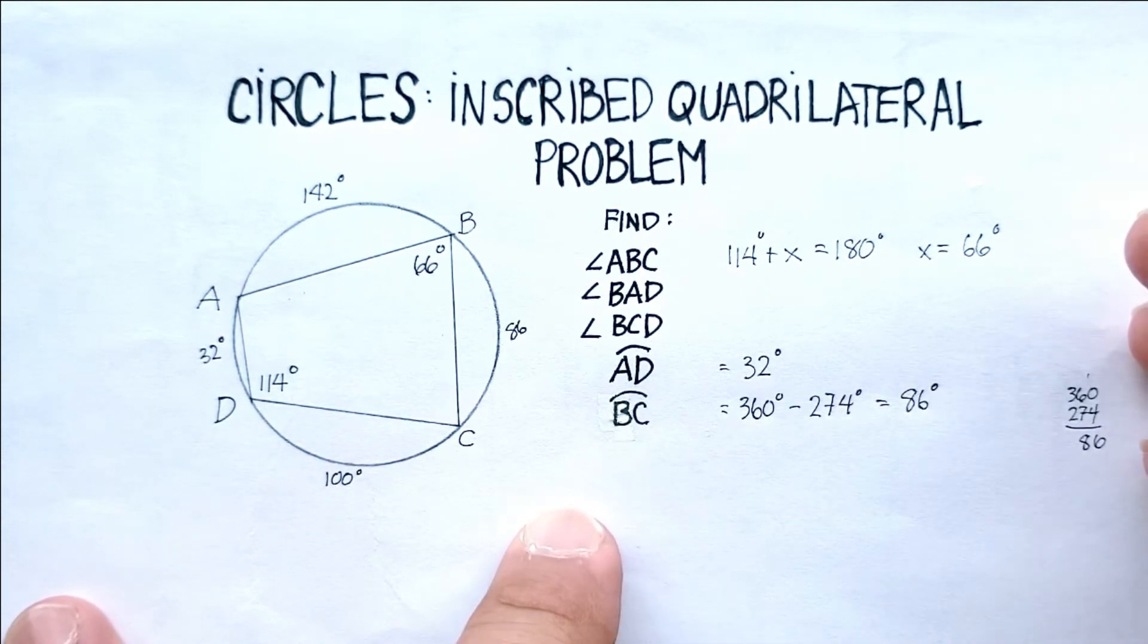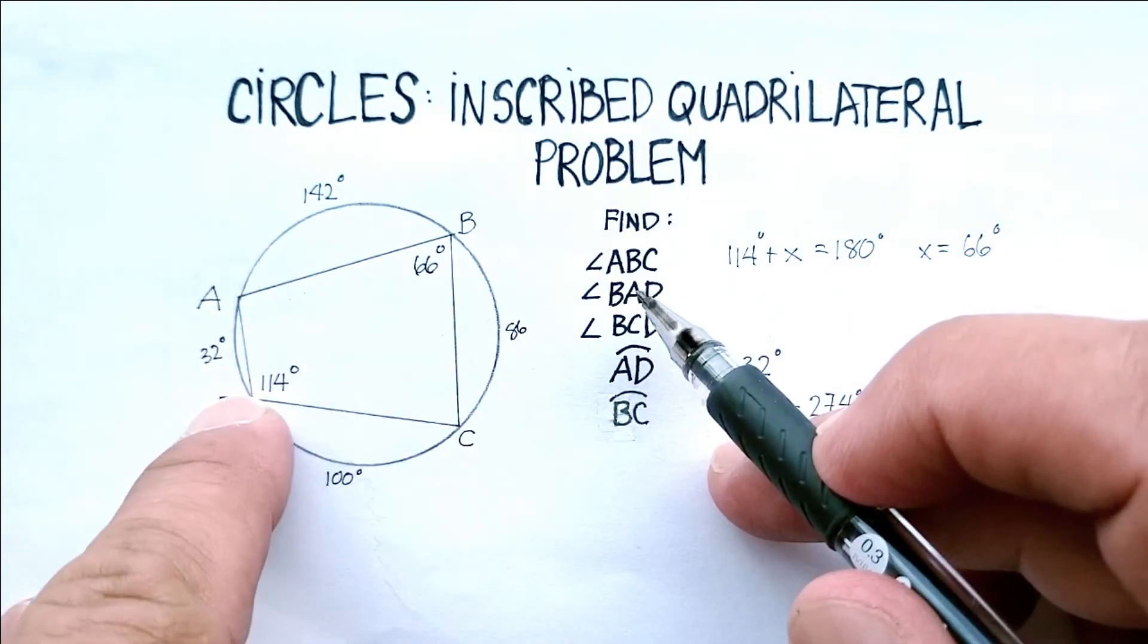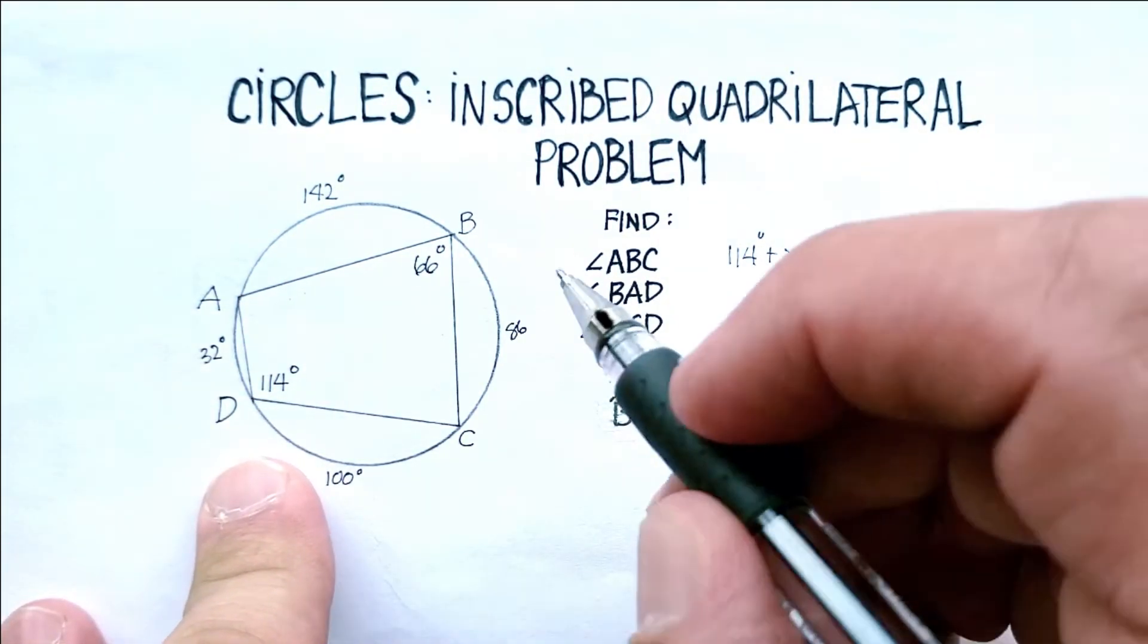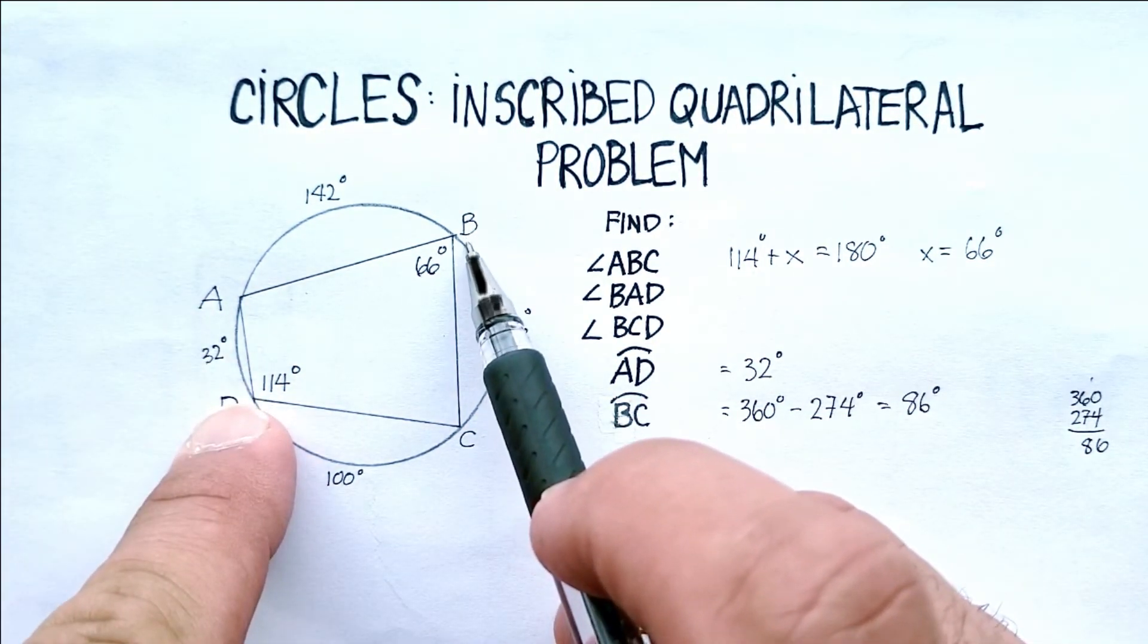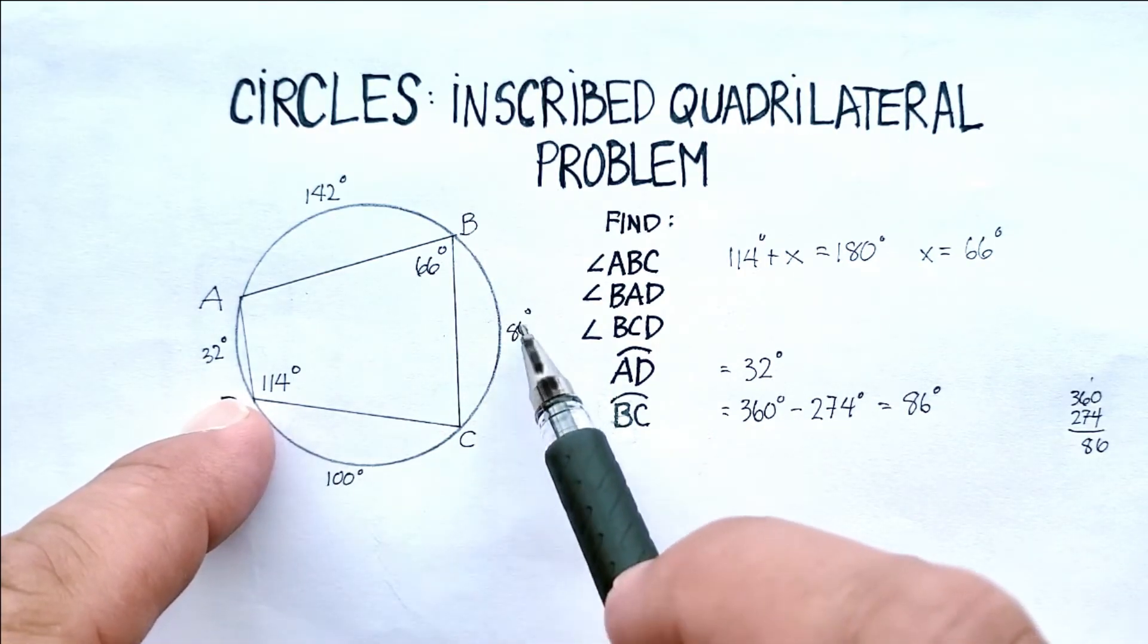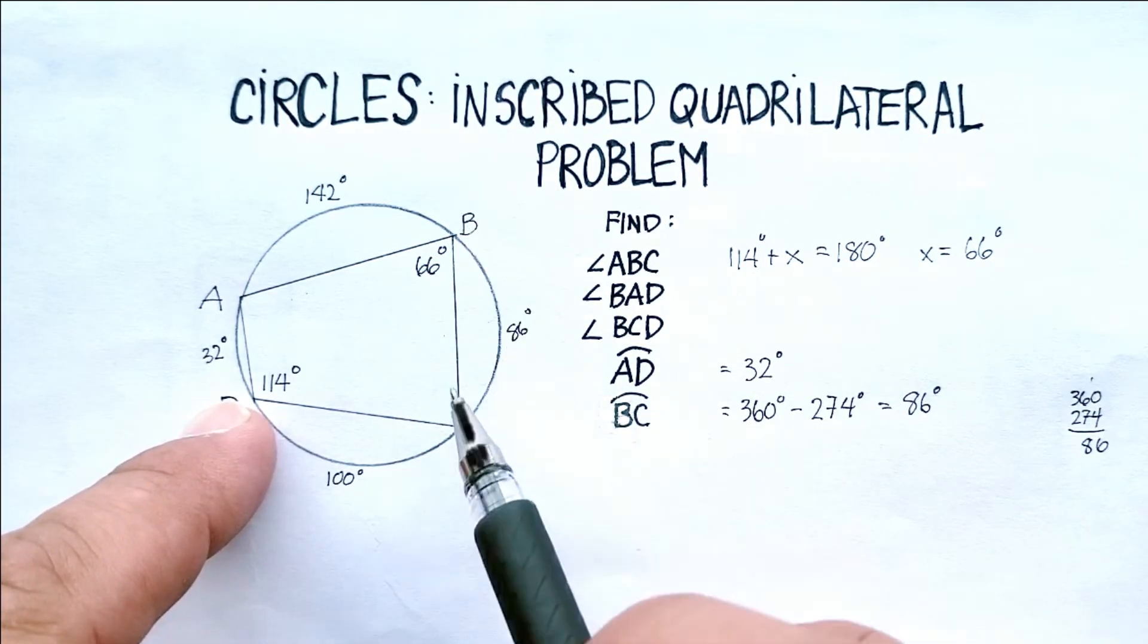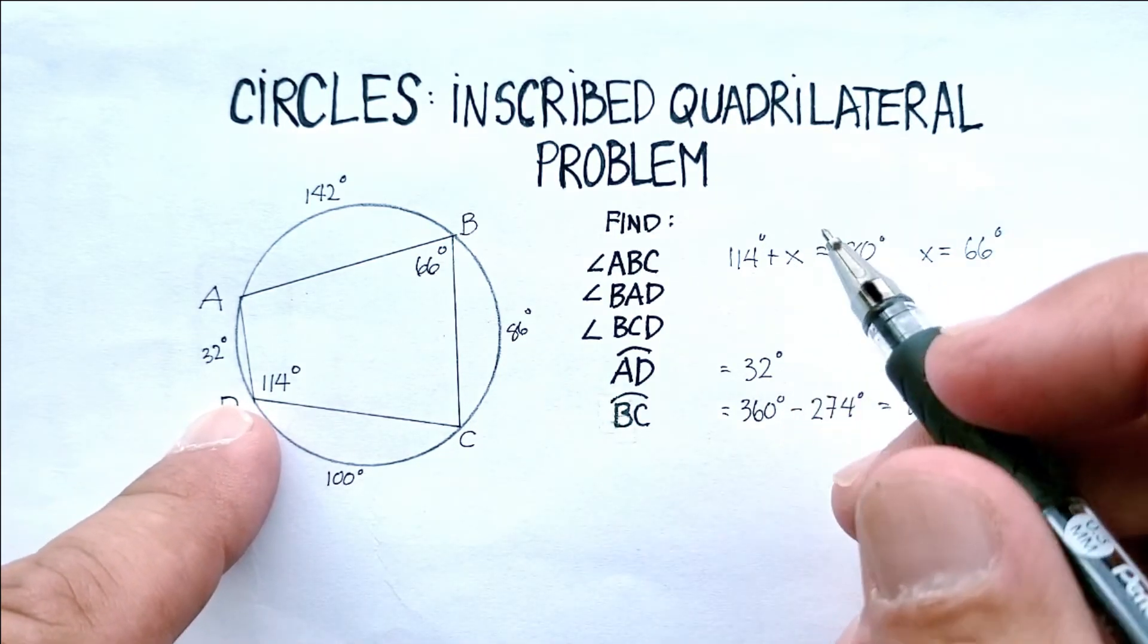Okay, we're getting there slowly. Now we need to find angle BAD. Now, what do we know? Angle BAD should be half of this intercepted arc, and we just figured out that this whole arc is 186 degrees.